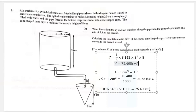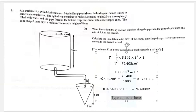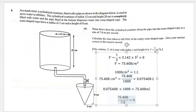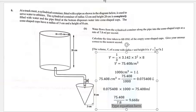The question asks us to calculate the time taken to fill one of the empty cups. One cup contains 75.408 mL of water. So we divide 75.408 by 7.8 milliliters per second, which gives 9.668 seconds. Corrected to the nearest second, that is approximately 10 seconds. So it took 10 seconds to fill one of the cone-shaped cups.